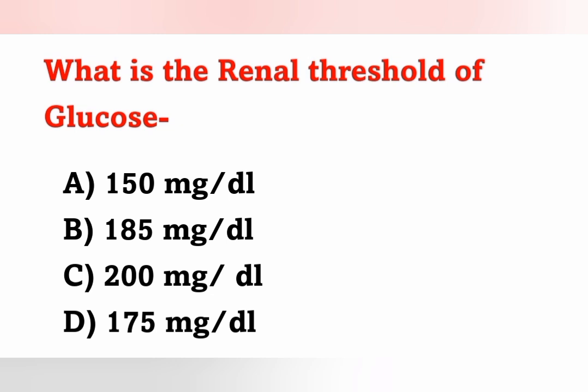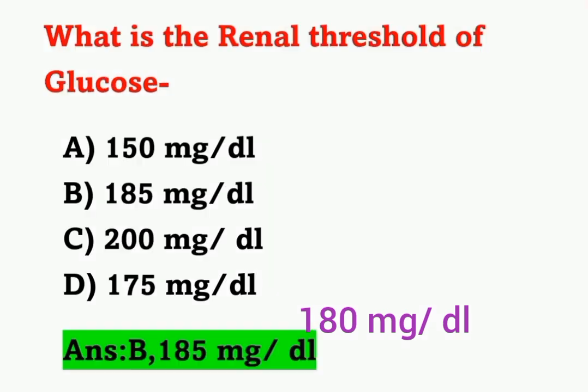Next question: What is the renal threshold of glucose? Options: A) 150 mg/dL, B) 185 mg/dL, C) 200 mg/dL, D) 175 mg/dL. The renal threshold value of glucose is 180 mg/dL. In our options, 185 is the closest, so the correct answer is 185 milligrams per deciliter, option B.